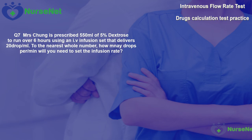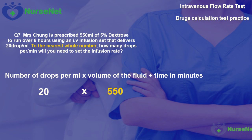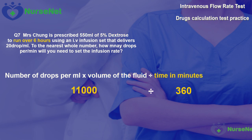Question 7. Mrs Chung is prescribed 550 millilitres of 5% dextrose solution to run over 6 hours using an IV infusion set that delivers 20 drops per millilitre. To the nearest whole number, how many drops per minute do you need to set the infusion? We use our drip rate formula: drops per millilitre multiplied by total volume divided by time in minutes. We have 20 drops per millilitre and 550 millilitres volume. 6 hours converts to 360 minutes.